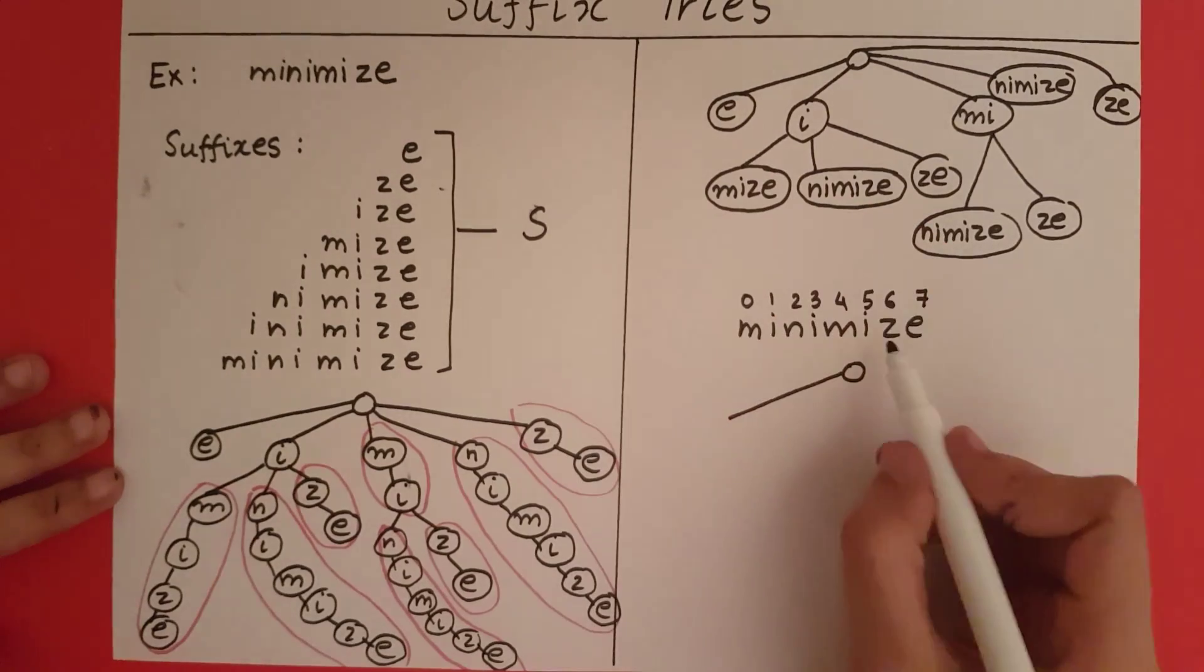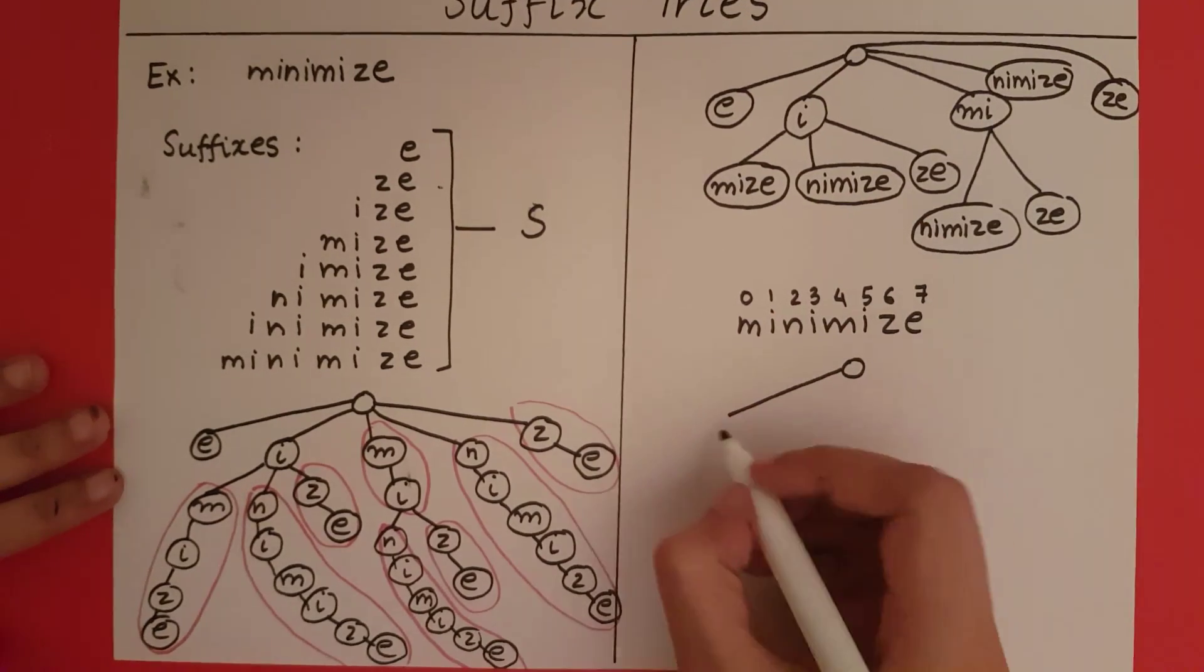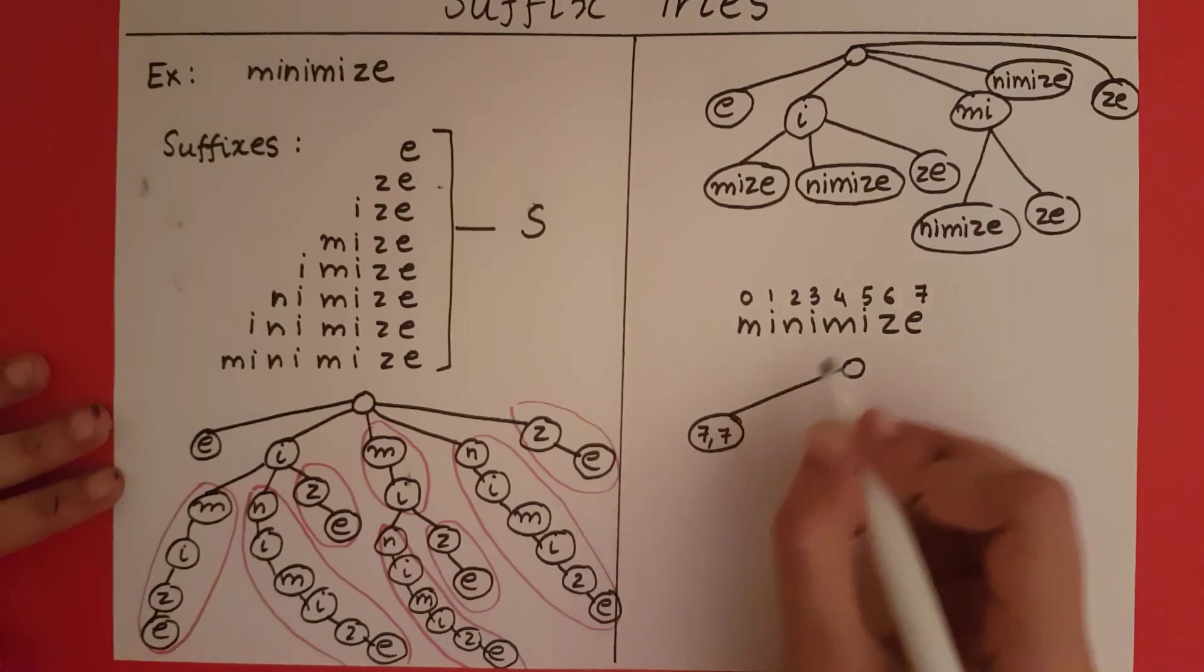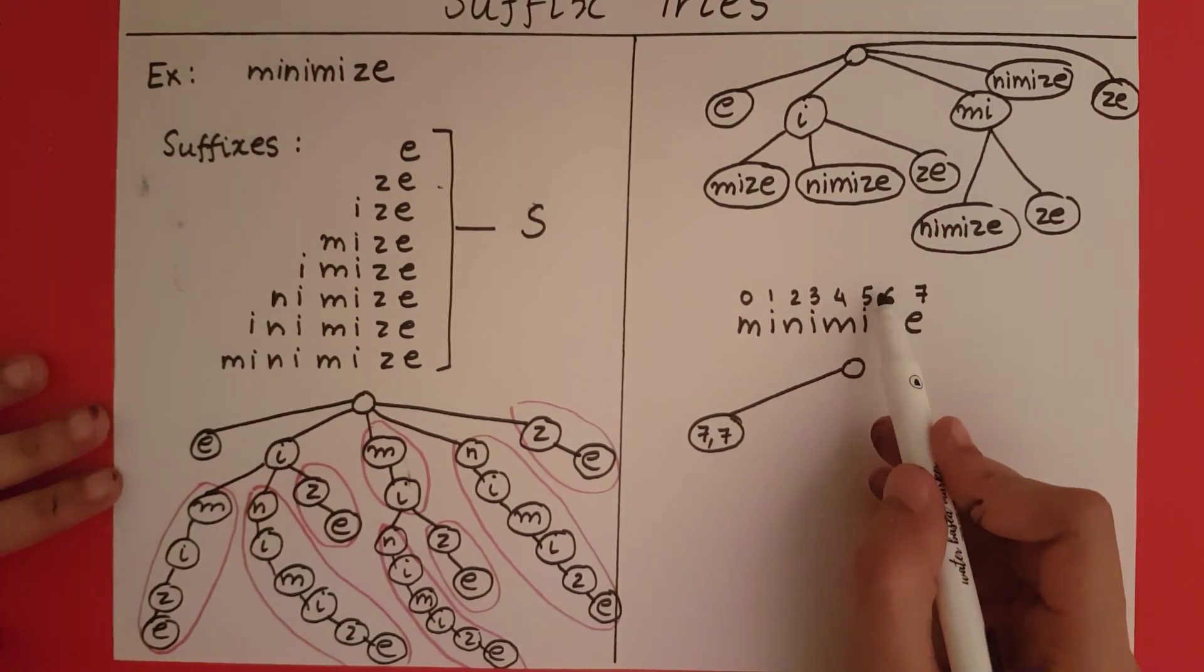We have e—e starts at 7 and ends at 7. Then I have i—i starts at 5 and ends at 5.